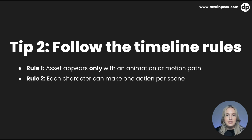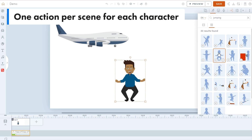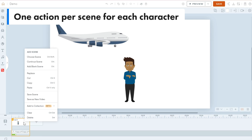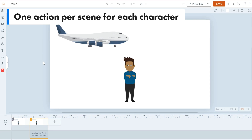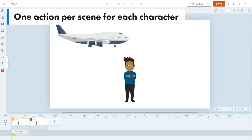Timeline rule number two is that each character can only make one action per scene. One character cannot make two different actions like crossing arms and then jumping — it will just change the action. So if you want to keep your character in the same scene but have them make different actions, all you need to do is select the scene, right-click, choose Continue Scene, and then change the action. The character just changes actions within the same scene.